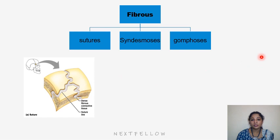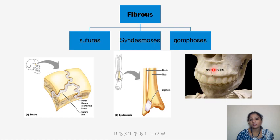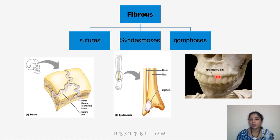The next variety is syndesmosis — the classic example is the lower end of tibia and fibula, and also the radius and ulna, connected by ligaments and fibrous membrane. The third variety of fibrous joint is gomphosis, where the tooth and its socket are connected by periodontal ligaments. Gomphosis is the only such joint in our body.